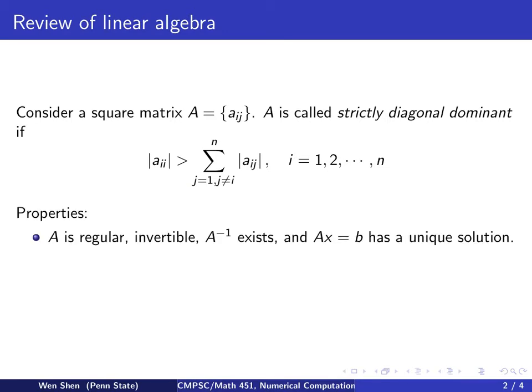Some nice properties of a matrix A which is diagonal dominant are the following. A is regular. What does that mean? That means it's non-singular and it's invertible, which means A inverse exists and is unique, which further implies the system Ax equals b has a unique solution.